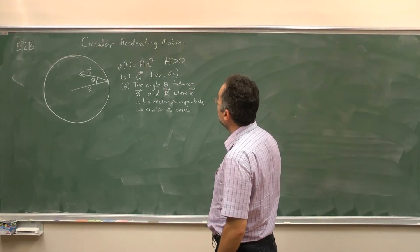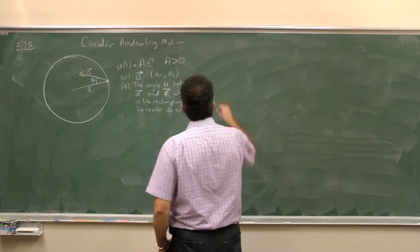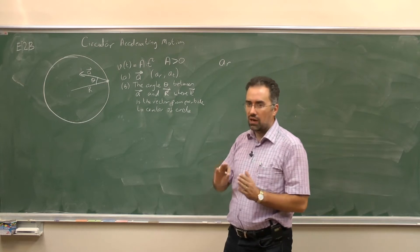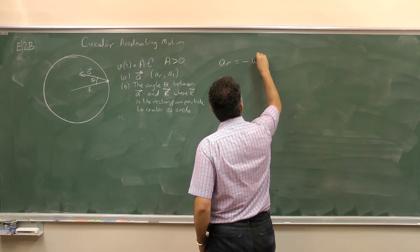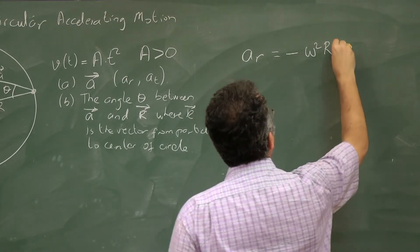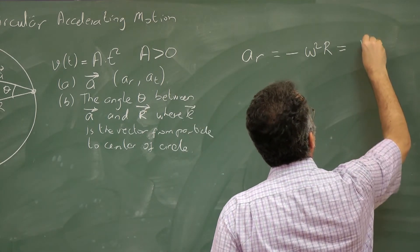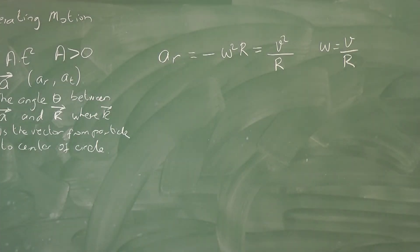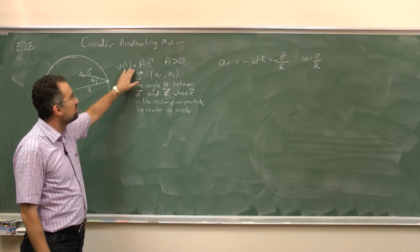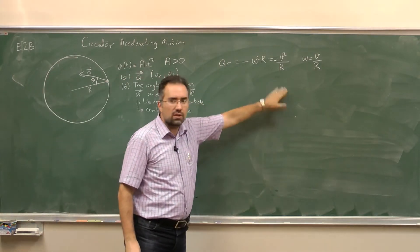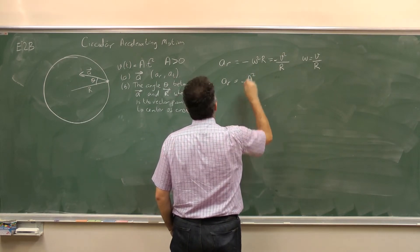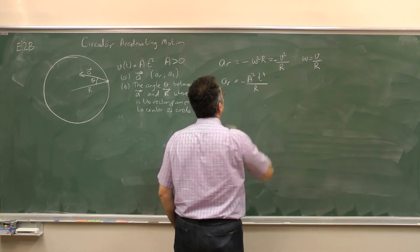For Part A, we want the acceleration. The radial component of the acceleration — where we define positive as outwards — is minus omega squared r. Equivalently, it's minus v squared over r, since omega equals v over r. Since we have an expression for speed, it makes sense to use the second form. So the radial acceleration is minus a squared t to the power 4 over r.